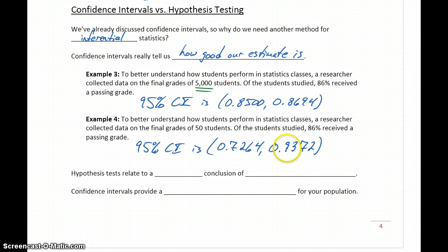In this case, we have a much wider range. In the first example, it looks like that average is around 85% to 87%, so a pretty narrow range to look at.